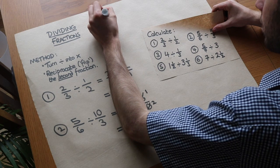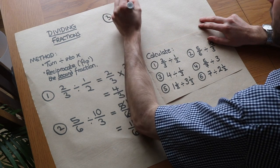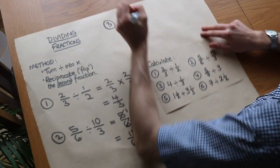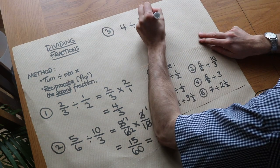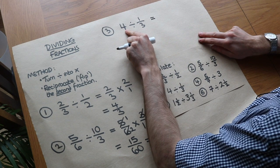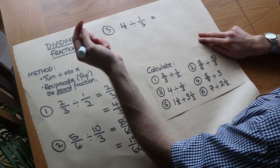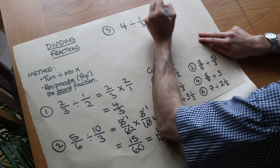What about the next one? 4 divided by 1/3. I notice this time that's not a fraction—we've got a mixture of a whole number and a fraction. Remember, all we need to do is write that as 4/1. 4 divided by 1 is 4, isn't it? And now it's a fraction.